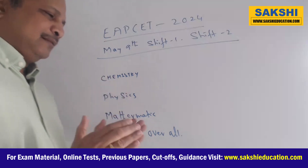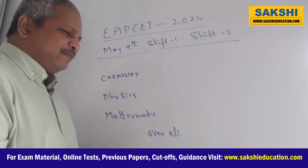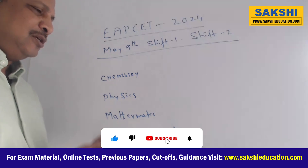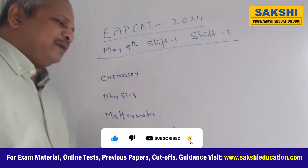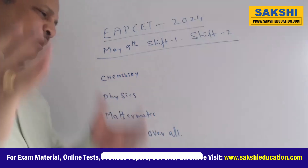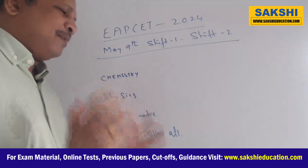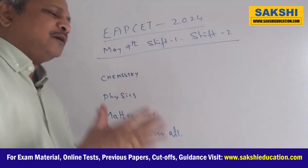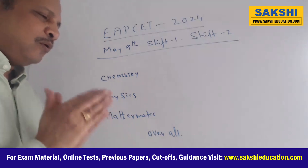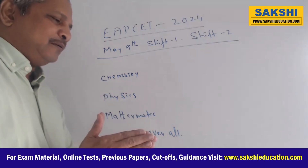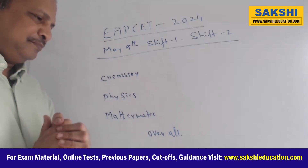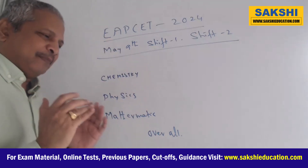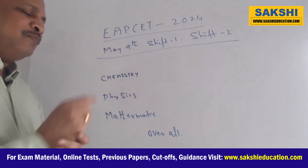Today, May 9th, morning shift and evening shift papers are over. This is the EAPCET (EAP SET) — the university papers are over for shift one and shift two. Looking at today's paper overall, you can say it is moderate to above moderate.